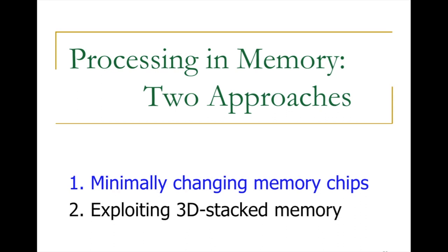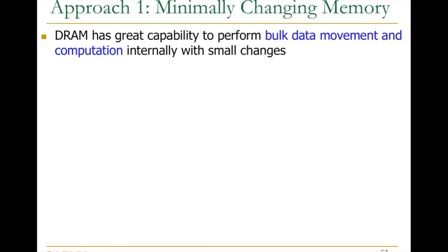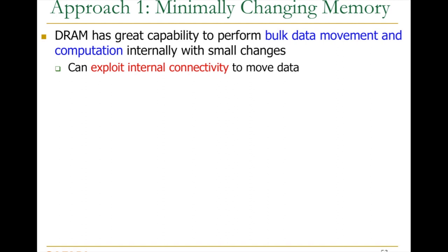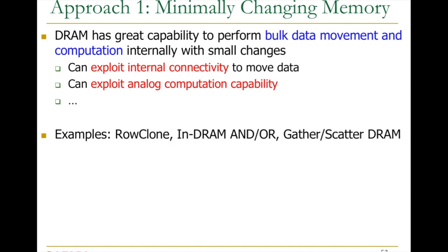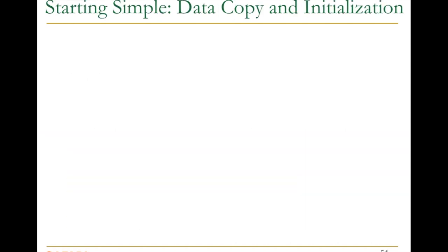I'm going to talk about two different approaches to processing in memory. One is minimally changing memory chips, and the second is exploiting 3D-stacked memory. Let me start with the first. Whenever you design memory, it actually has capability to perform data movement internally and perform computation internally if you make very small changes. Today we don't exploit this. We can exploit the internal connectivity to move data, and exploit the analog computation capability that exists in many memories. I'm going to start by cheating — I'll talk about data movements, specifically data copy and initialization, which are used in many, many applications.